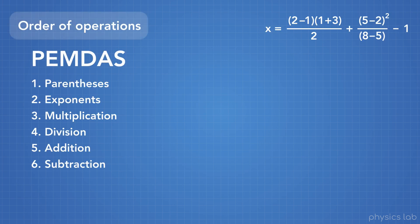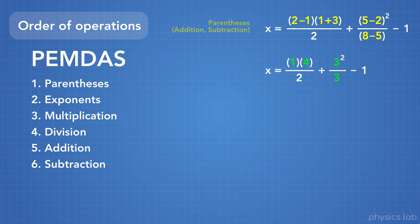Let's work through an example using the order of operations. Following PEMDAS, first we do any math inside parentheses — and the stuff inside parentheses also follows the order of operations itself. In our case, everything in parentheses is addition and subtraction, so we do it all in one step: 2 minus 1 becomes 1, 1 plus 3 becomes 4, 5 minus 2 becomes 3, and 8 minus 5 becomes 3. Next up is any number with an exponent — now we have 3 squared, which is 3 times 3, giving us 9.